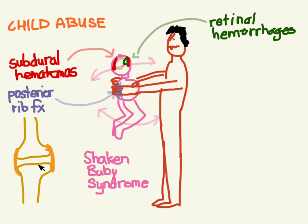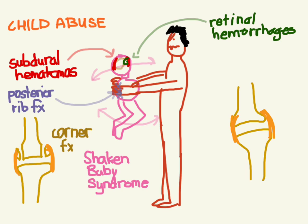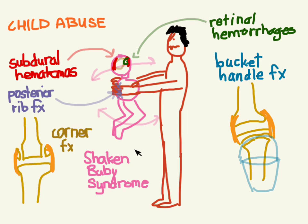With the legs flailing, the whiplash motion causes violent movement, and you might even get ligaments tearing off pieces of the bones — these are called metaphyseal chip fractures or corner fractures. The forces may also go the other way, possibly tearing through the growth plate, causing what looks like a bucket handle — these are called bucket handle fractures.